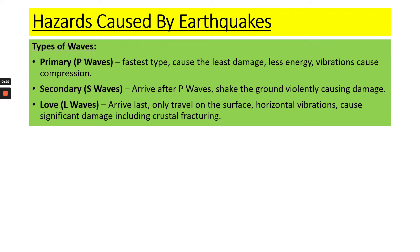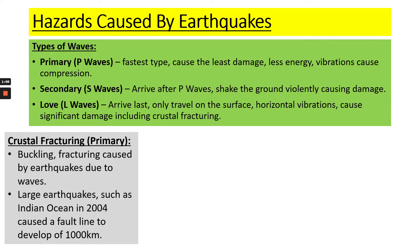The first thing to look at is hazards caused by earthquakes. These are P waves, S waves and L waves, which are types of waves that cause the damage from earthquakes. Primary waves are fastest, they cause the least damage, they have the least energy and they cause compression on the landscape. Secondary waves are much more violent, they cause violent shaking and they arrive after P waves. L waves arrive last, they only travel on the surface horizontally and they can cause significant damage, including structural damage like crustal fracturing.